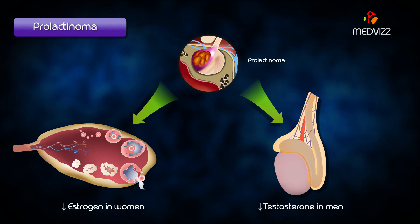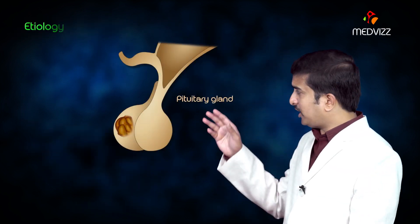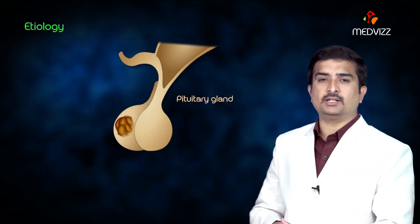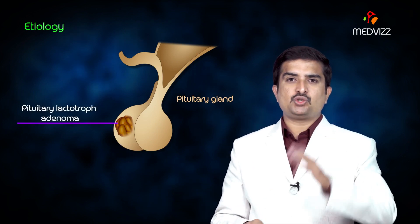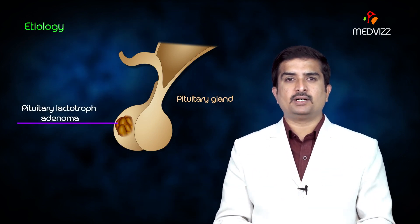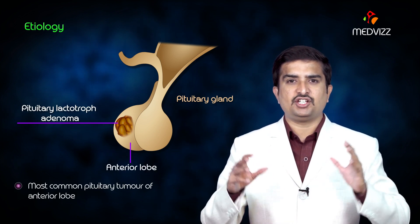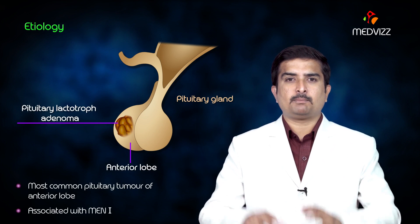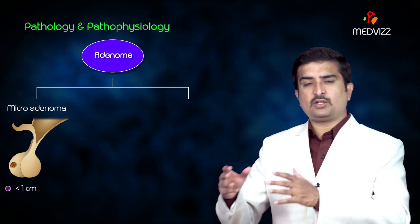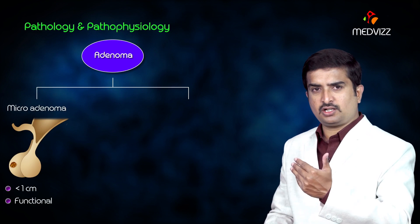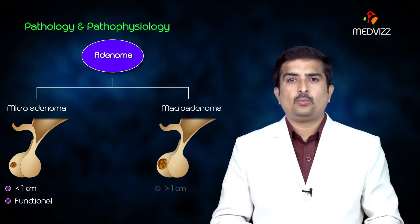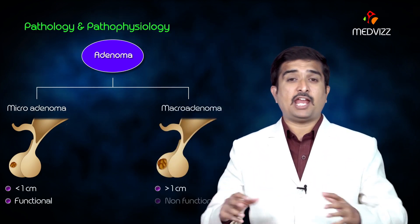The etiology of prolactinoma is mainly caused by pituitary lactotrophic adenoma, which is the most common pituitary tumor of the anterior lobe, and it is associated with MEN-1. In terms of pathology, the adenoma can be a micro adenoma, which is less than one centimeter and is functional, or a macro adenoma, which is greater than one centimeter and non-functional.